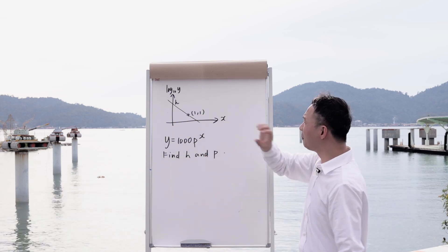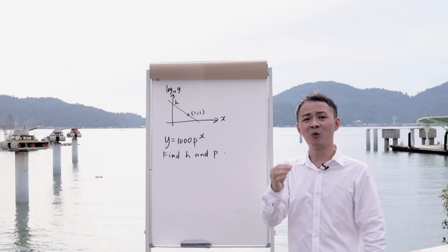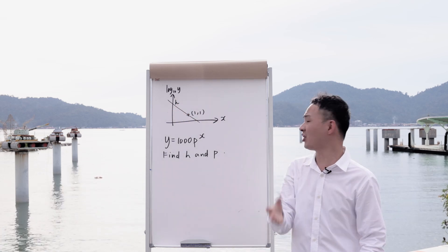So what you need to do is make the connection between this equation and the graph. Because linear law, what's the meaning of linear? Linear basically means straight line.